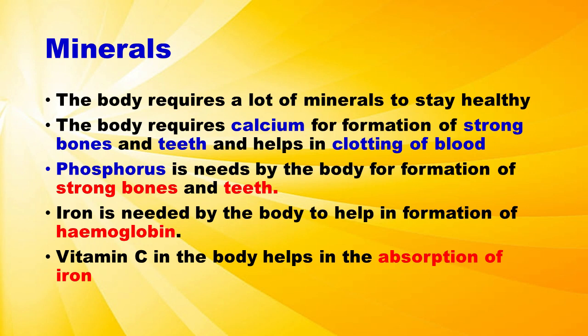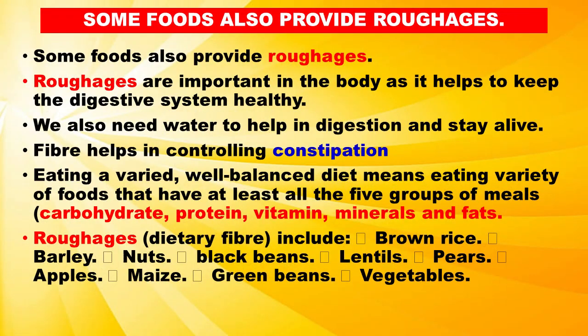Vitamin C in the body helps in the absorption of iron. Some foods also provide roughages. Roughages are important in the body as they help to keep the digestive system healthy. We also need water to help in digestion and stay alive. Fiber helps in controlling constipation. Eating a varied, well-balanced diet means eating a variety of foods that have at least all the five groups: carbohydrate, protein, vitamin, minerals, and fats.